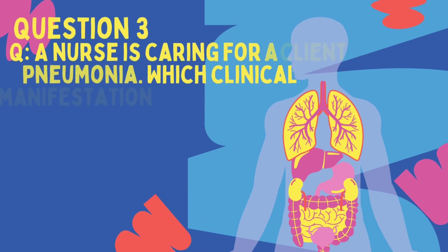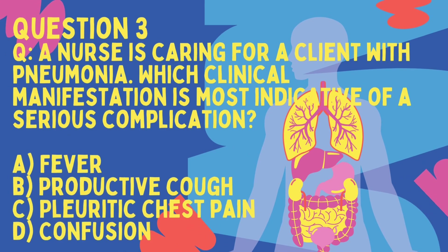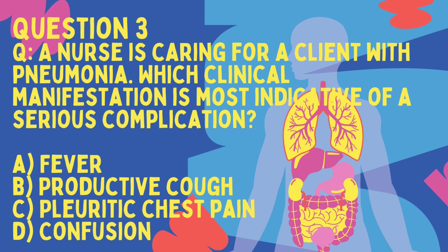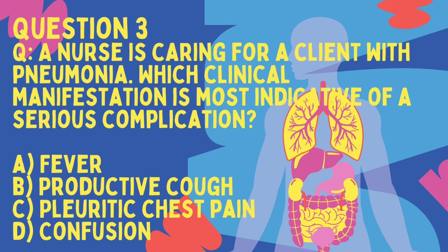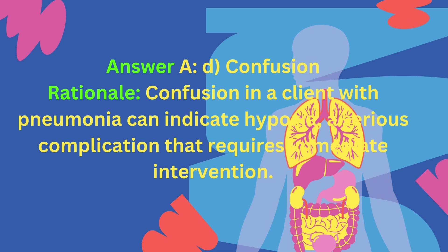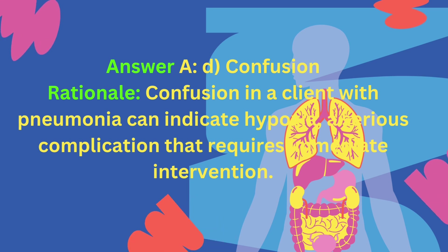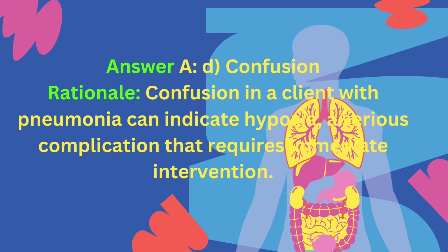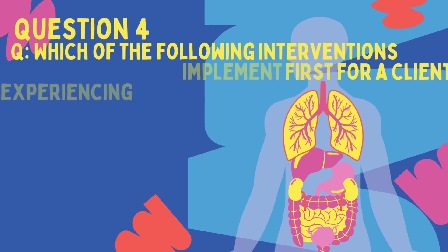Question 3. A nurse is caring for a client with pneumonia. Which clinical manifestation is most indicative of a serious complication? A. Fever, B. Productive Cough, C. Pleuritic Chest Pain, D. Confusion. Answer: D, Confusion. Rationale: Confusion in a client with pneumonia can indicate hypoxia, a serious complication that requires immediate intervention.